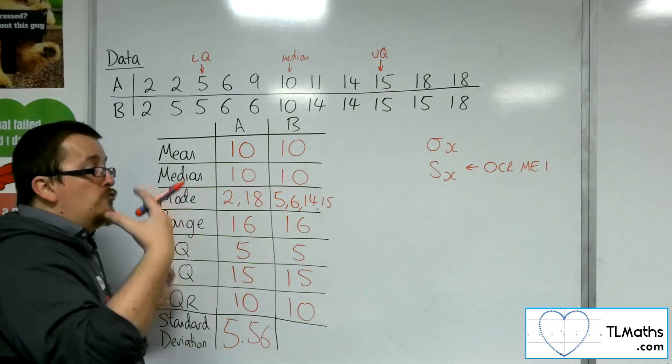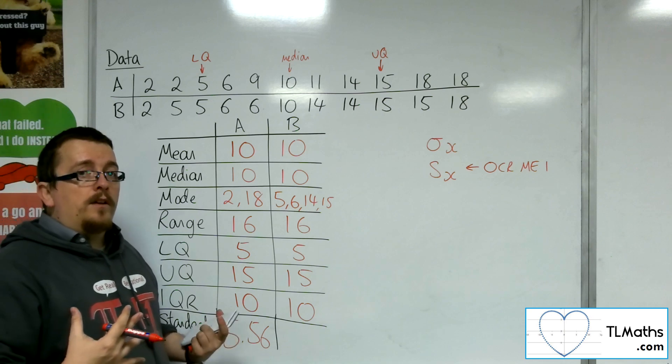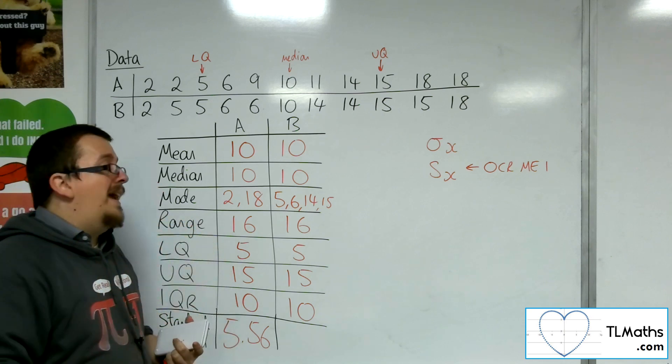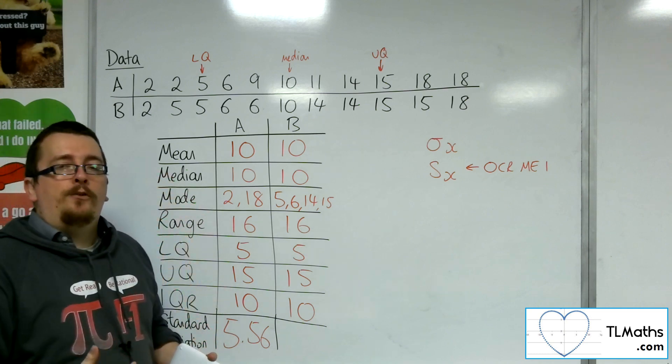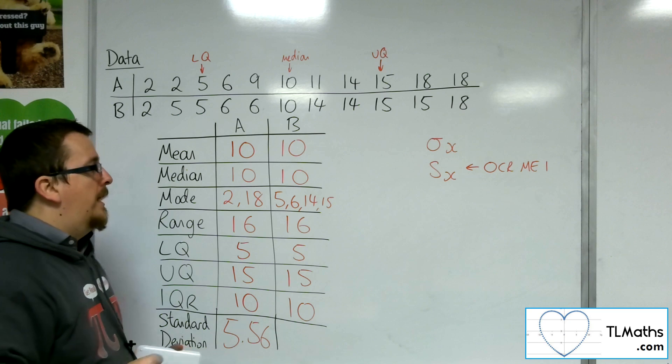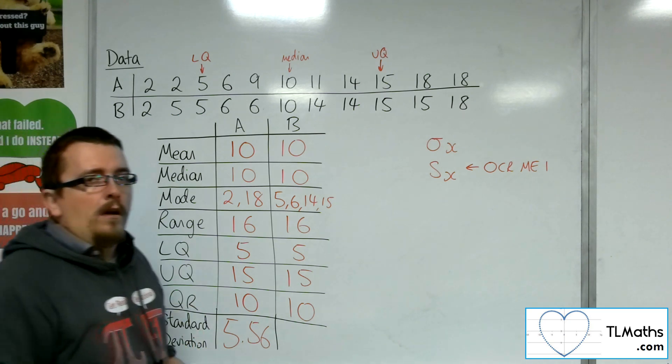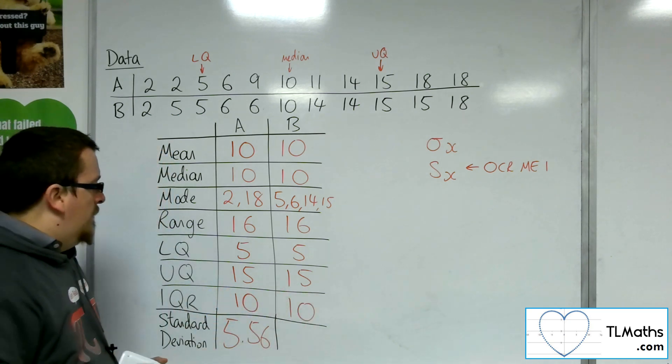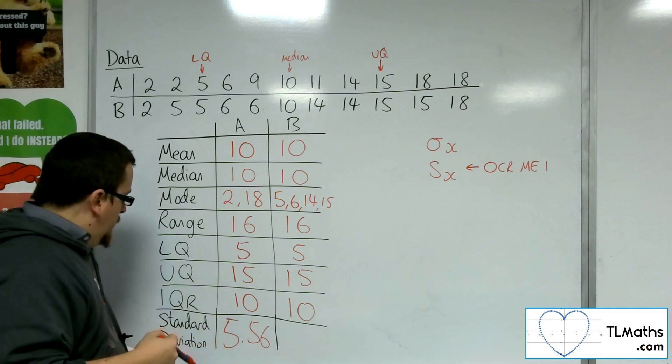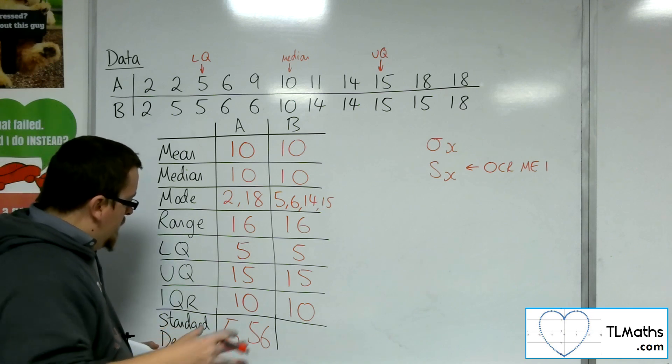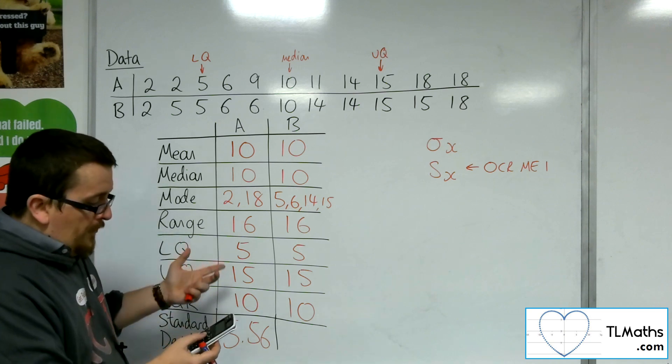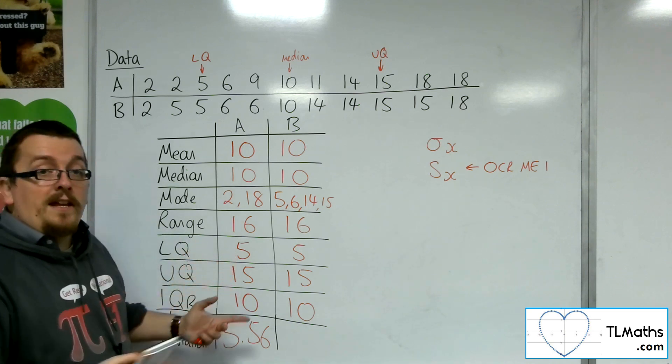Now the reason for that I will be making clear in a couple of videos' time. So if you're studying OCR-MEI, then what they refer to as the standard deviation is SX, which for the rest of us using AQA, OCR, and Edexcel, we would refer to as the sample standard deviation. That's what the SX is that we would use. But for MEI, the standard deviation is SX. So just so we're clear. So we've got the 5.56 for that one. And if you're doing MEI, then you'd have 5.83.